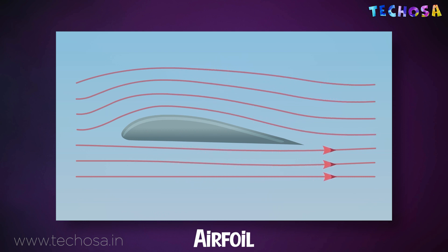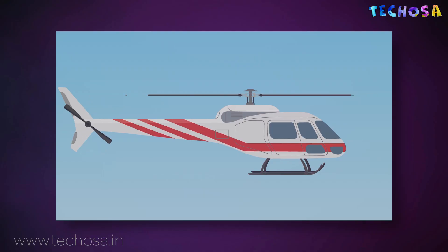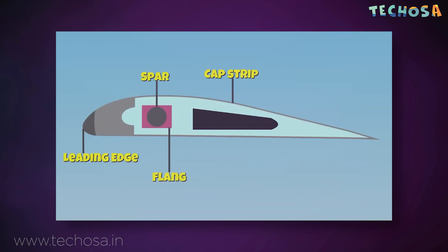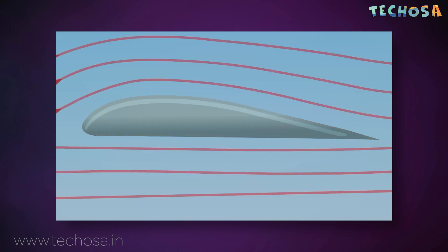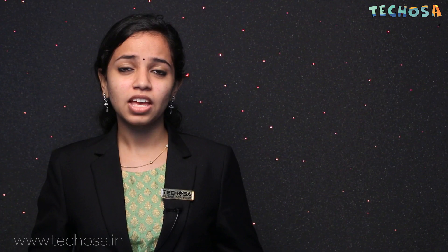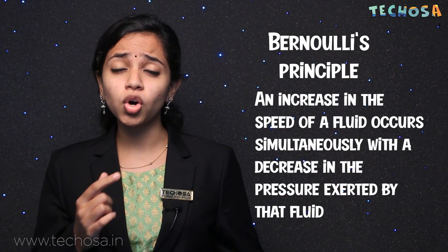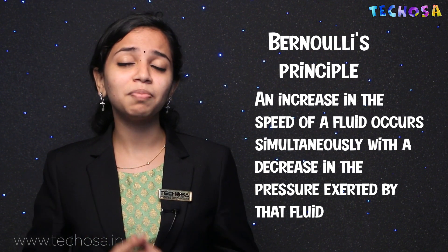An airfoil is any surface that produces more lift than drag when passing through air at a given angle. So what is the airfoil in a helicopter? Its spinning blade. The blades of a chopper are uniquely designed so that they can generate lift. The blades are curved on top and flatter on the bottom. This curved shape makes the air flow faster over the top and slower on the bottom. This causes the air pressure on top of the blade to decrease and the air pressure on the bottom to be higher. This happens due to Bernoulli's principle, which states that an increase in the speed of a fluid occurs simultaneously with a decrease in the pressure exerted by the fluid.